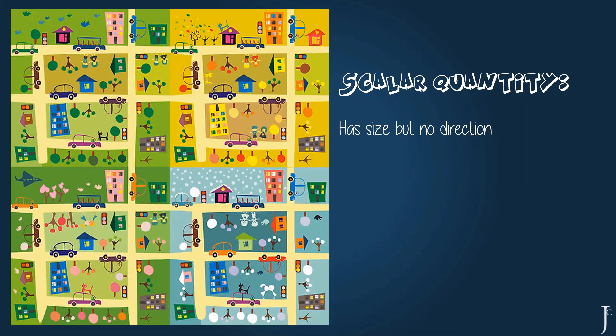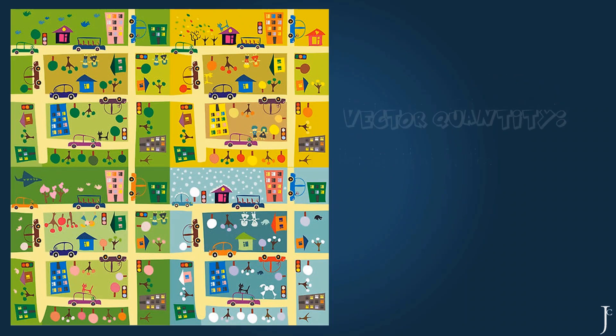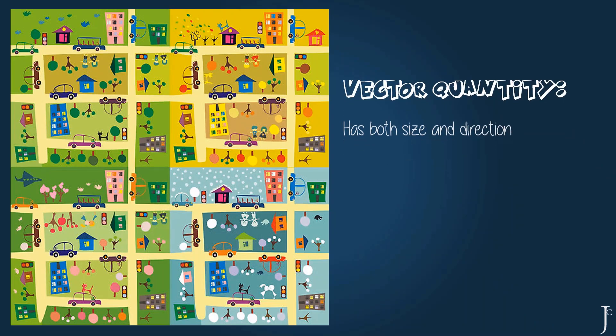This is very different to a vector quantity. A vector quantity has both size and direction. So if we're looking back at our house and our school, we would have to use Pythagoras to solve for our unknown, which is the direct distance from our school to our home.